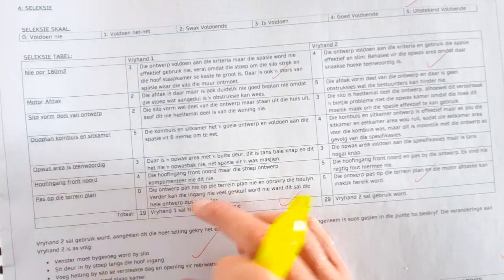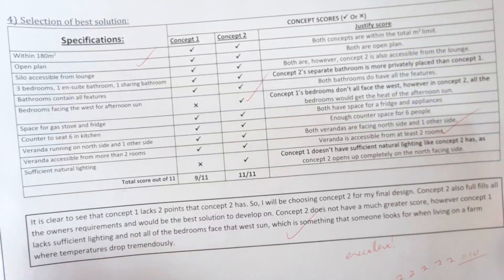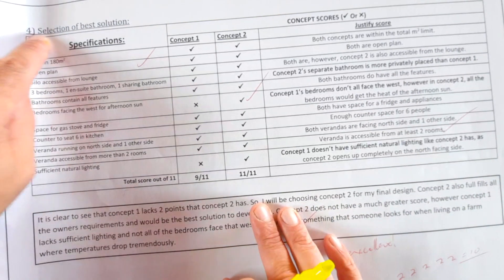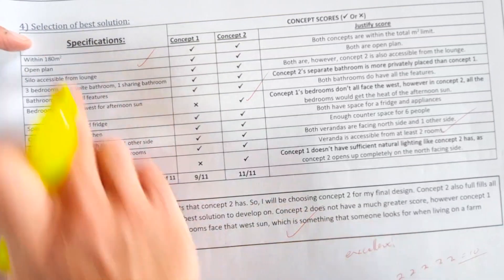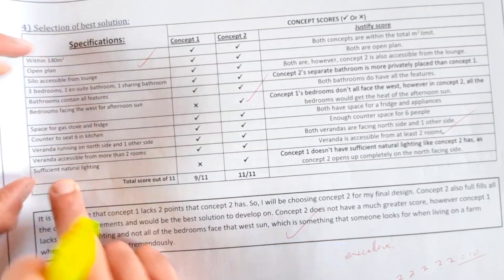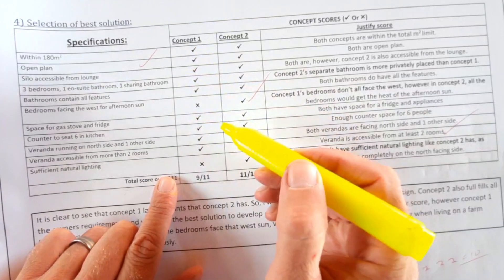So here's another example. This rating scale is even more simplified. Make sure your title is correct, selecting best solution, numbered it correctly. And again, many more than was required, but you need four. And they just basically did yes and no.